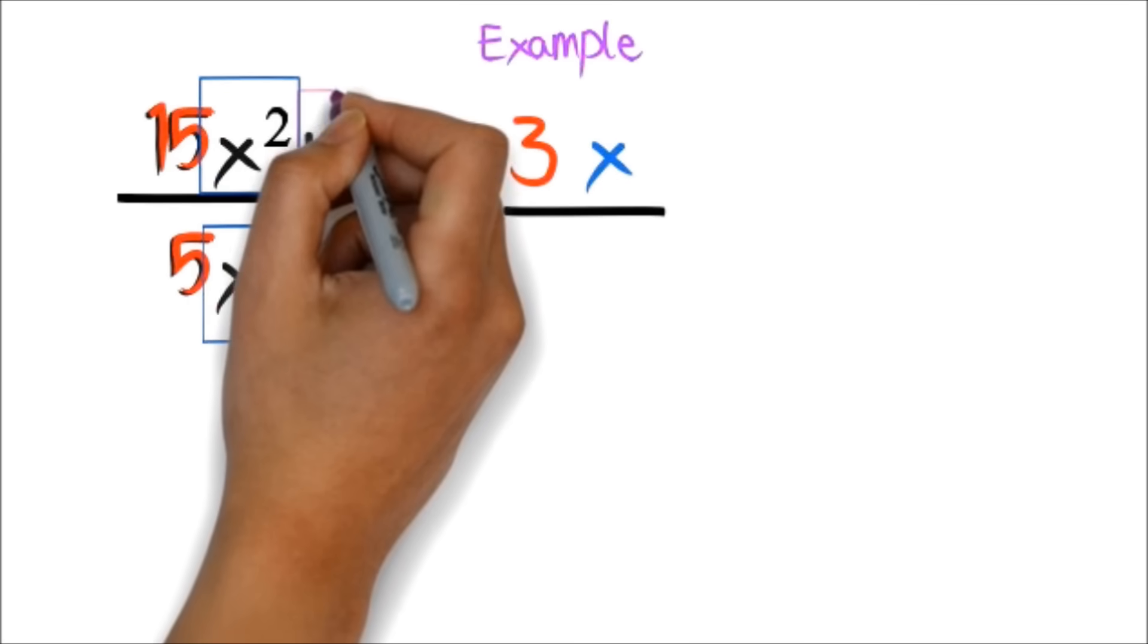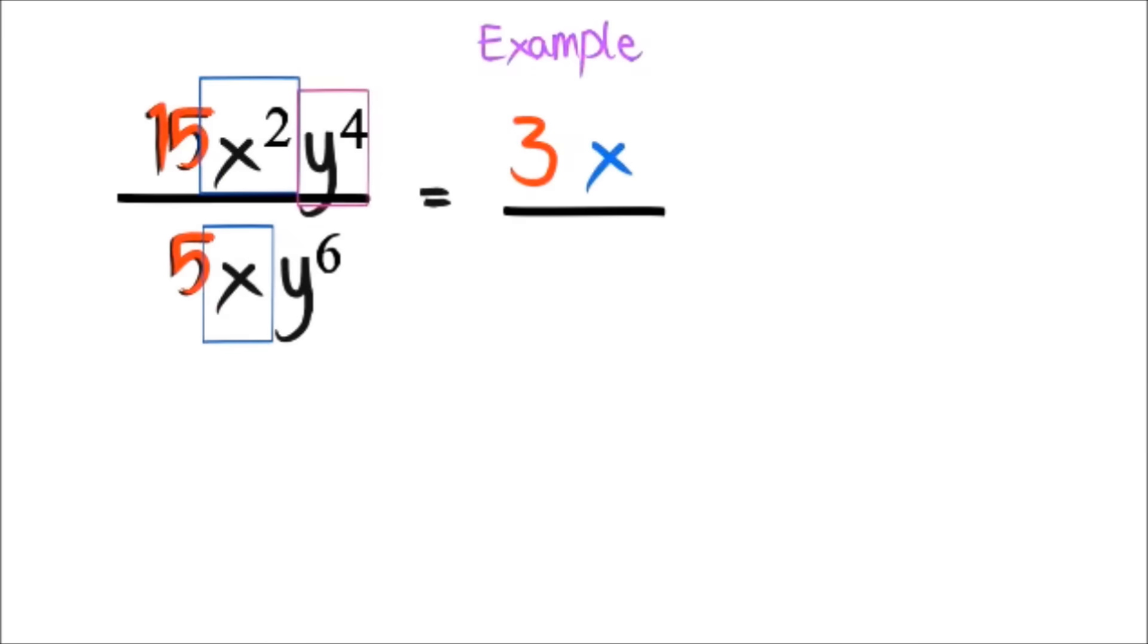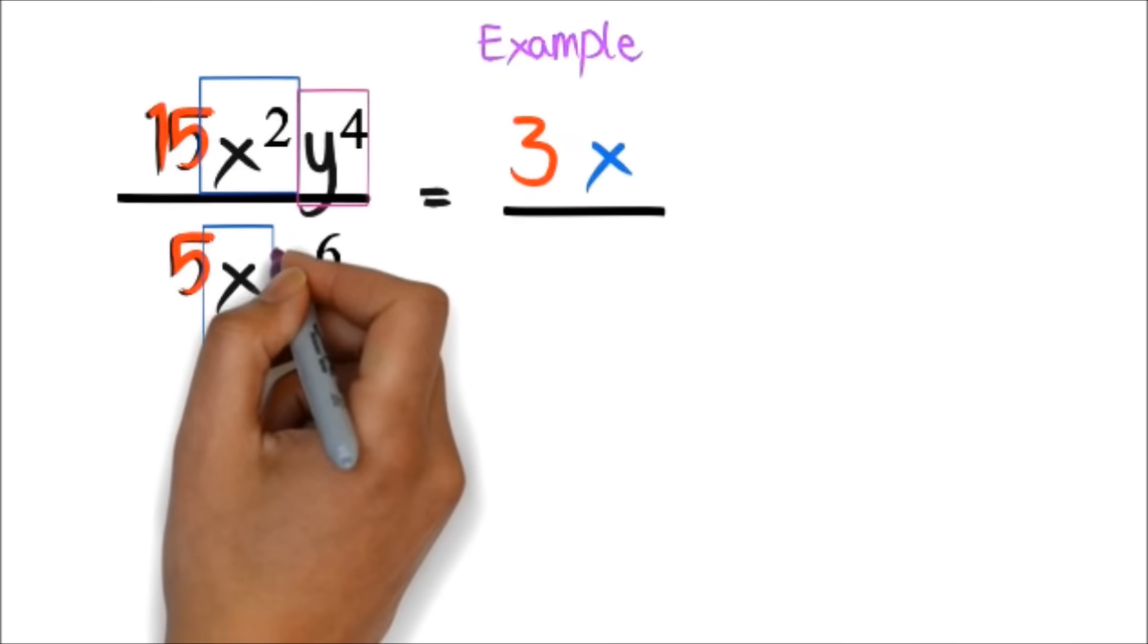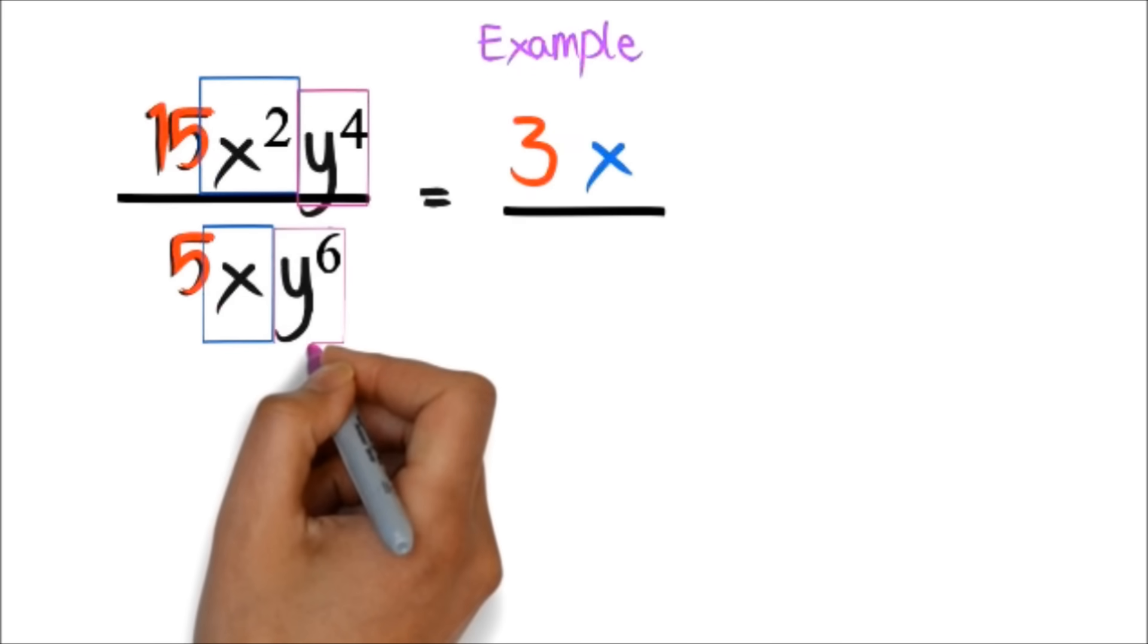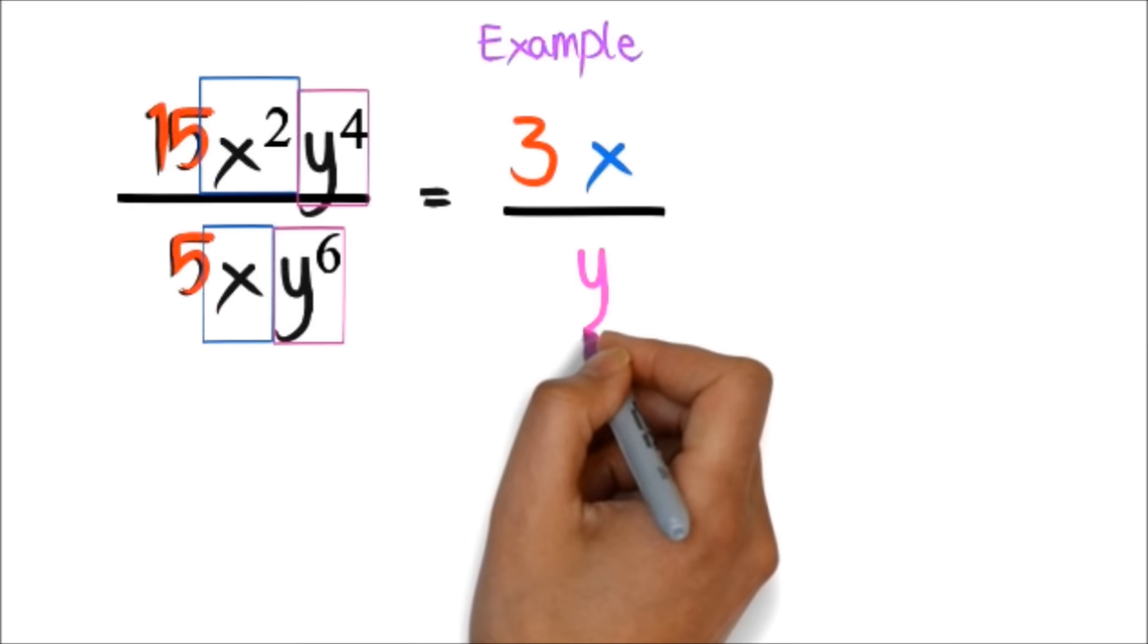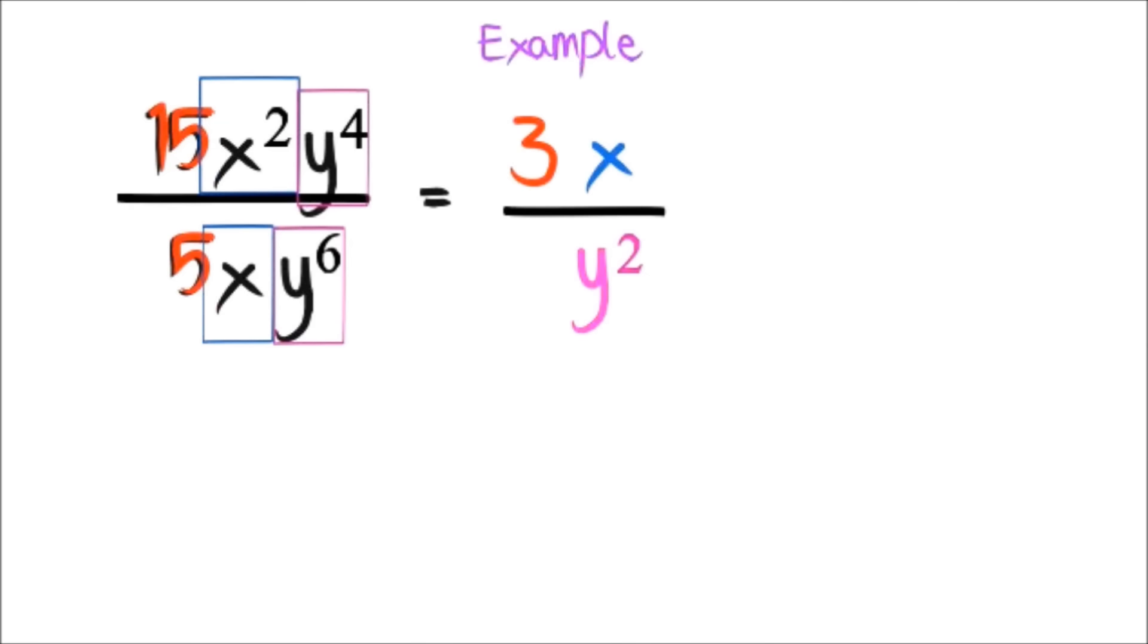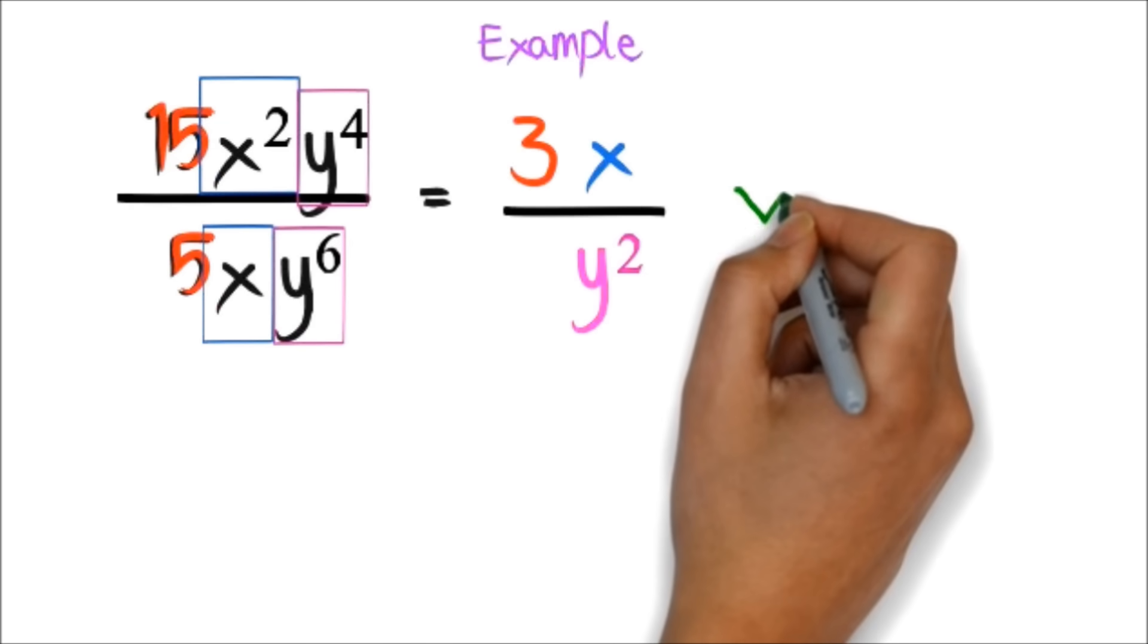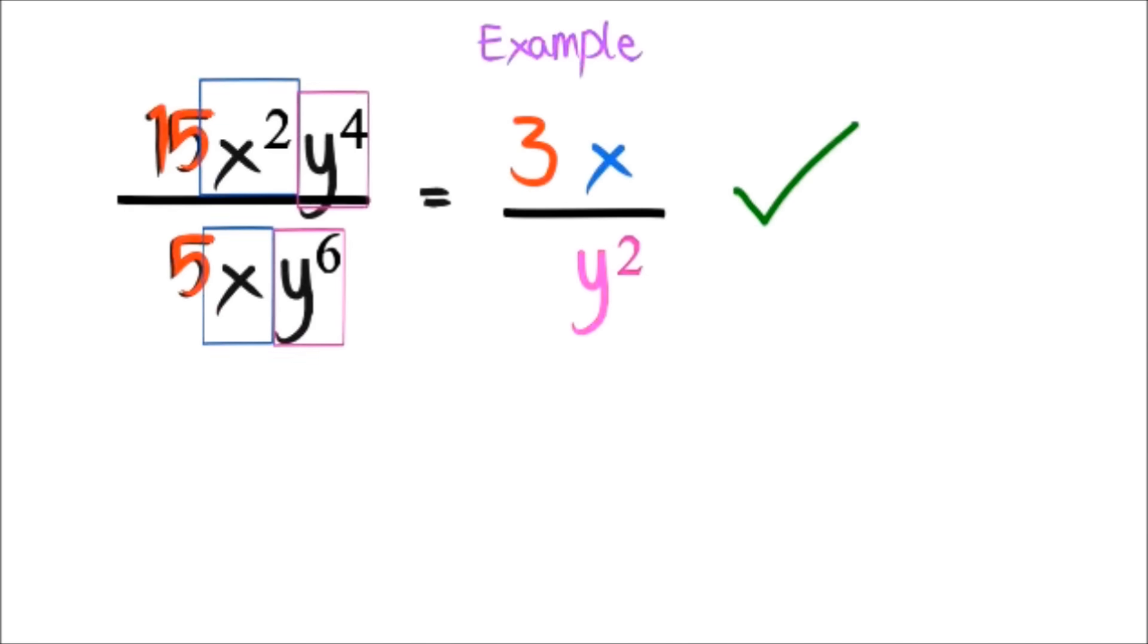Also, we see there are 4 y's at the top and there are 6 y's at the bottom. So, there will be 2 y's left at the bottom. So, this is our final answer.